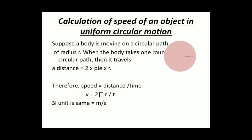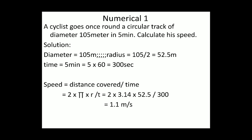So this is the only topic which was left from chapter 1. Now, numerical 1: A cyclist goes once around a circular track of diameter 105 meter in 5 minutes. Calculate his speed. Now diameter is given 105 meter, so radius you all know that it will be half - 52.5. And time is given in minutes, so convert it into seconds. That is 5 into 60, that is 300 seconds. So speed is equal to distance upon time: 2πR upon time. And on calculation it will come out 1.1 meter per second.